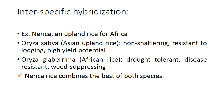An example of interspecific hybridization is NERICA, an upland rice for Africa. Oryza sativa, the Asian upland rice, is non-shattering, resistant to lodging, and has high yield potential. Oryza glaberrima, the African rice, is drought tolerant, disease resistant, and weed suppressing. NERICA rice combines the best of both species — it is a cross combination of Oryza sativa and Oryza glaberrima, that is an interspecific hybrid.